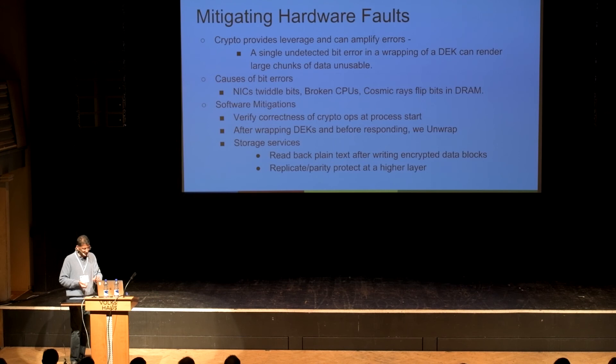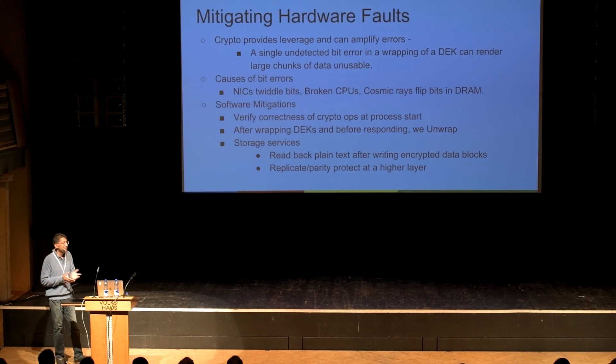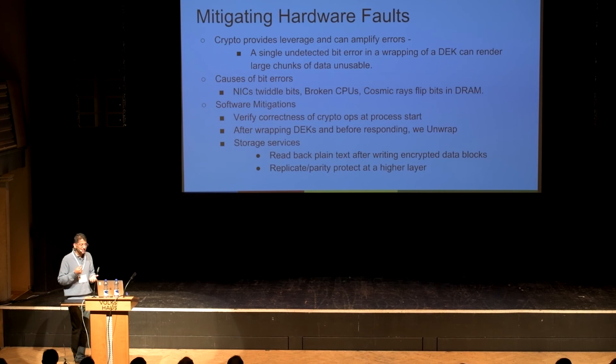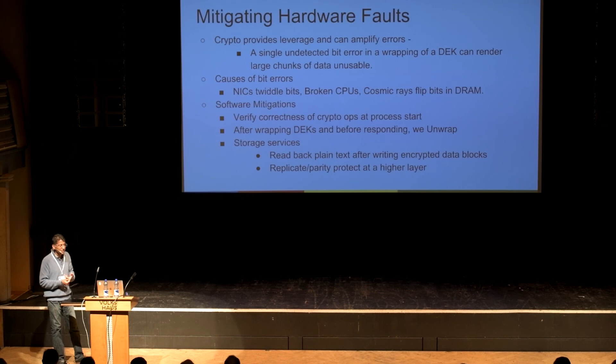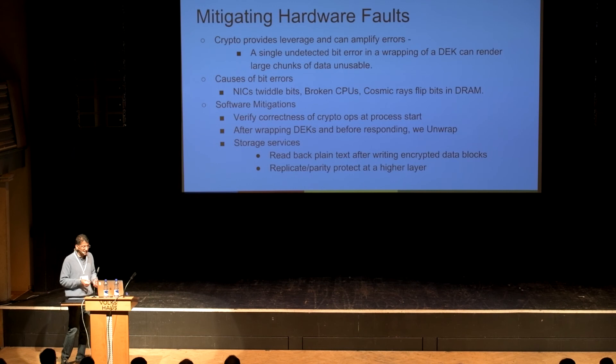We also need to mitigate hardware faults. Crypto provides leverage — it can amplify errors. A single bit error in the wrapping of a data encryption key could cause you to lose a whole bunch of data. So we need to defend against broken CPUs, bit-twiddling, cosmic rays. Apart from hardware-level ECC checks, at the software layer we verify crypto operations at startup. After wrapping data encryption keys, we unwrap them before responding to ensure the operation is reversible. Storage services also read back their data in plaintext after writing encrypted data, and replicate one level up — so even if one region goes down, you still have the data.